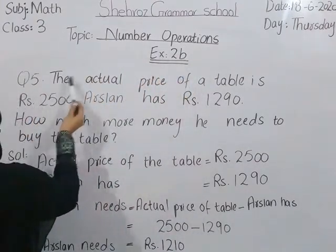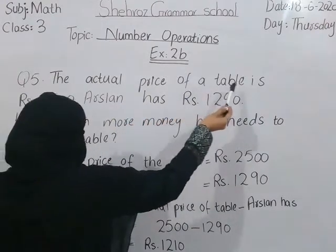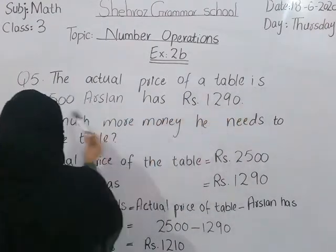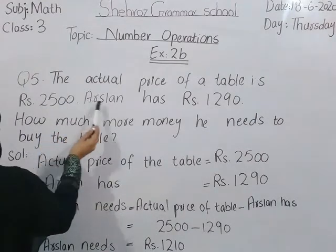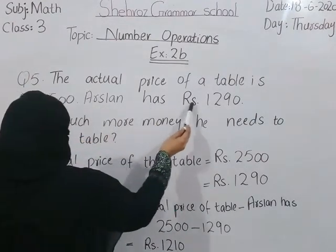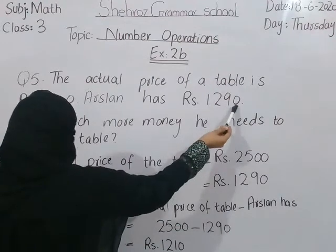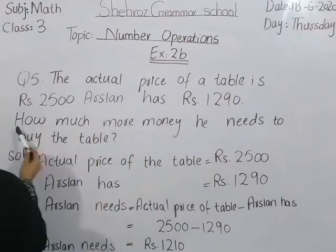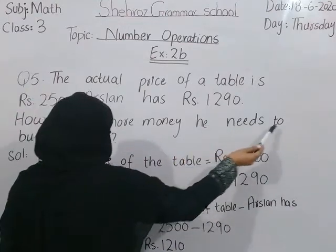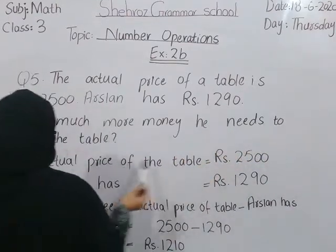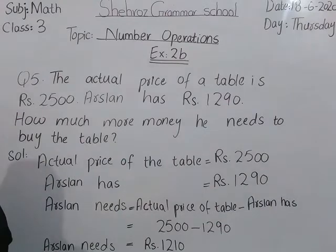Question number 5. The actual price of a table is Rs. 2500. Arslan has Rs. 1290. How much more money does he need to buy the table? This is question number 5.